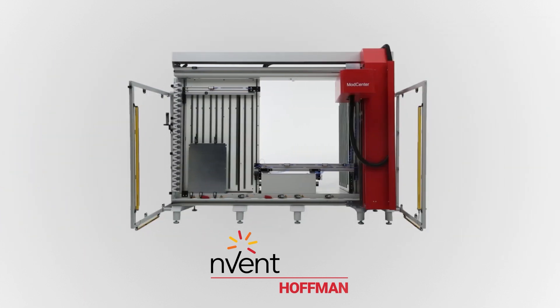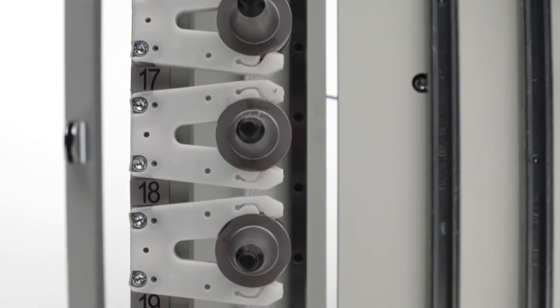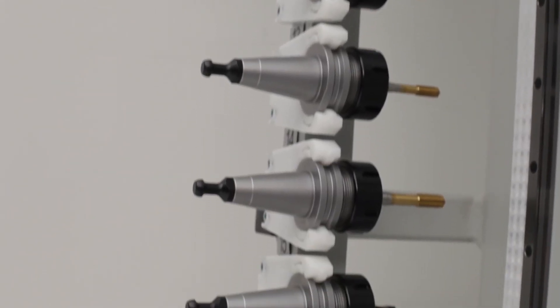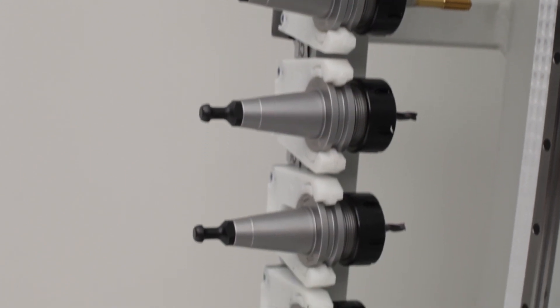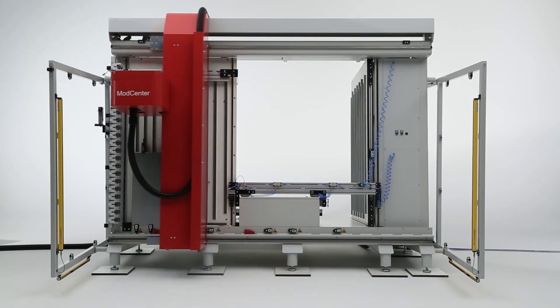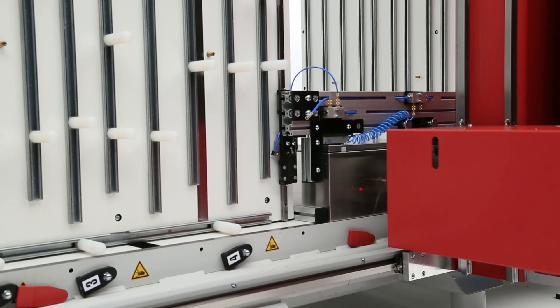For dedicated enclosure and control panel modifications, from quickly modifying one-off panels to performing complex modifications on volumes of fully fabricated enclosures with 100% repeatable accuracy, the Steinhauer Mod Center automates all the drilling, tapping, milling, and processing steps you used to perform by hand.